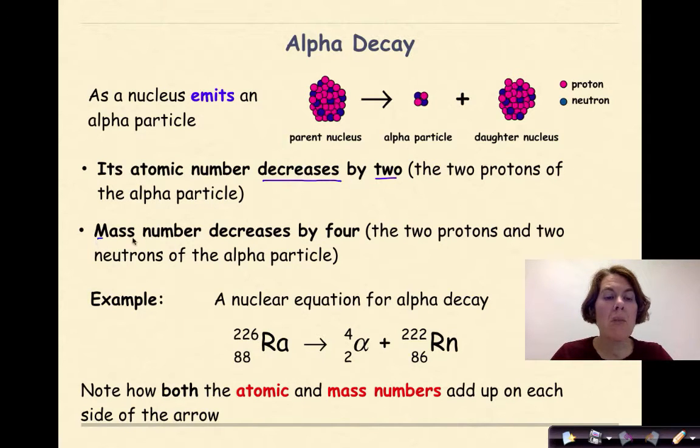The mass number is also going to decrease by a total of four, two protons and two neutrons of the alpha particle. So again, here's my parent nucleus. When my parent nucleus undergoes alpha decay, an alpha particle is released, and ultimately this daughter nucleus is going to lack two protons and two neutrons, because those particles are found in this released alpha particle.